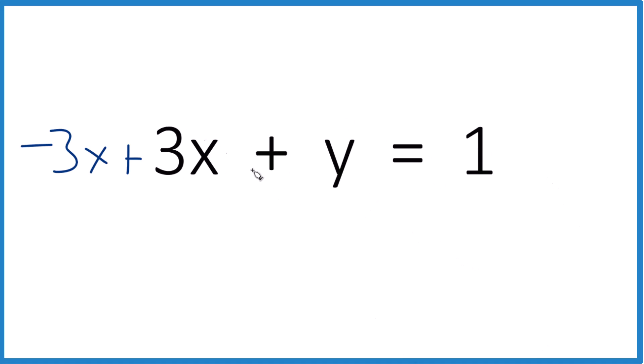But if we do something to this side, this is algebra, we have to do it to this side as well. So let's subtract 3x here. So negative 3x plus 3x, that's 0, plus y. So we just have y, and that equals 1 minus 3x.